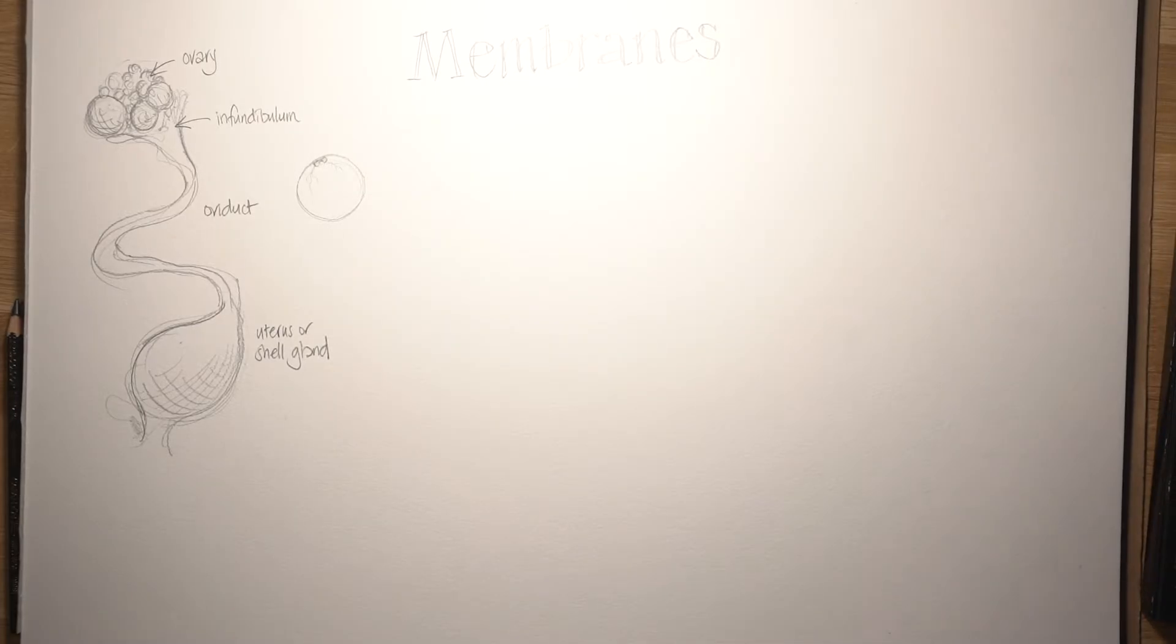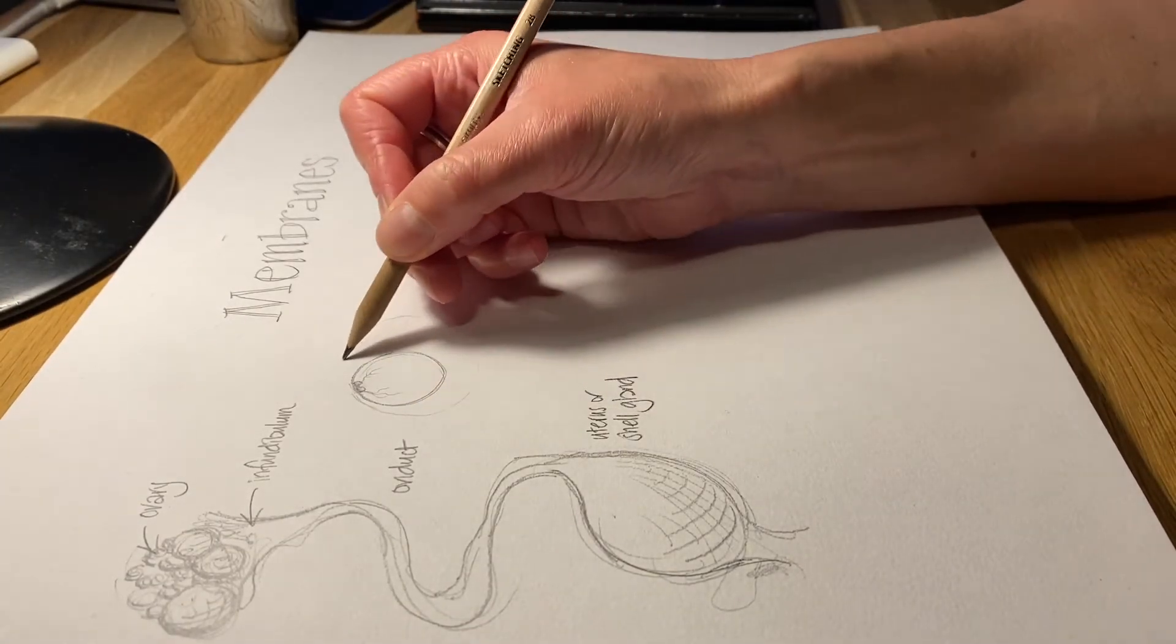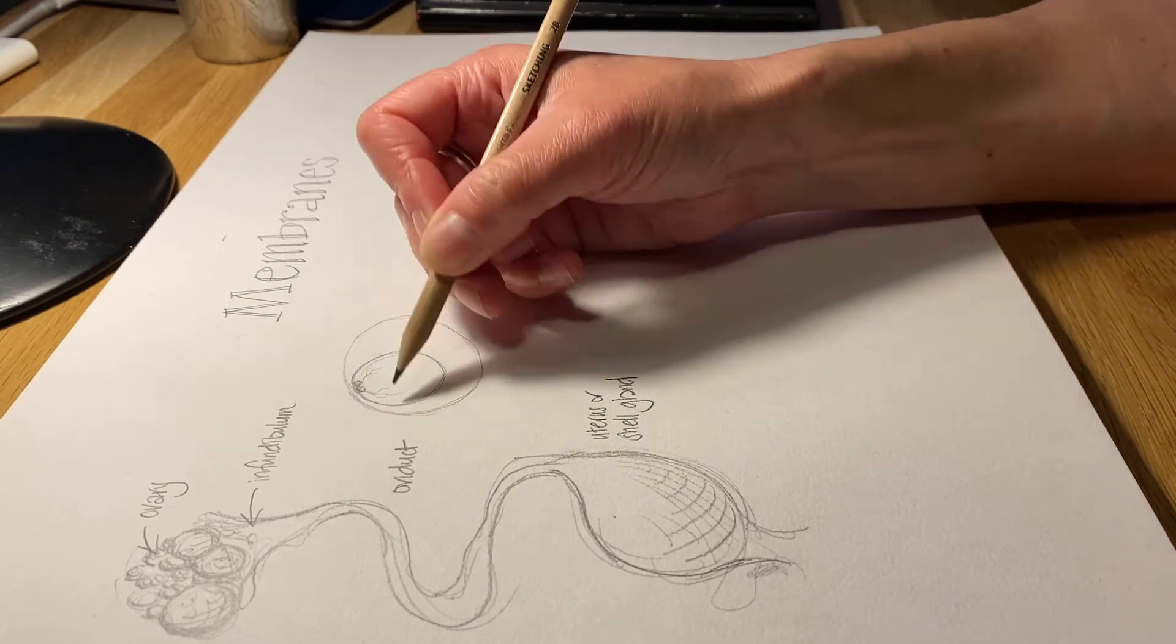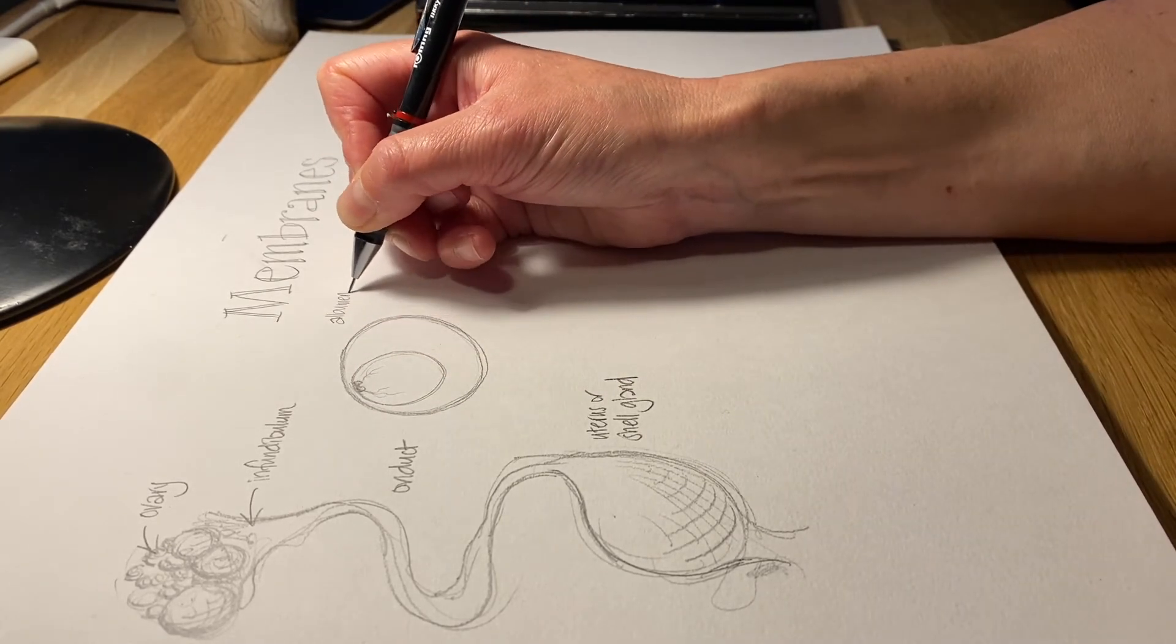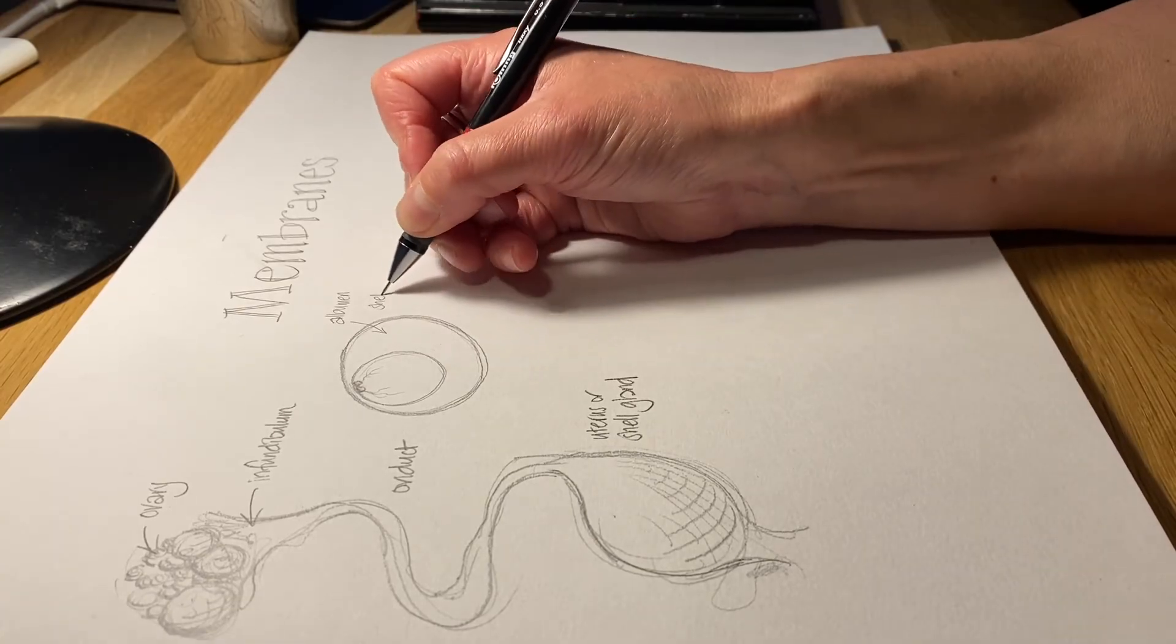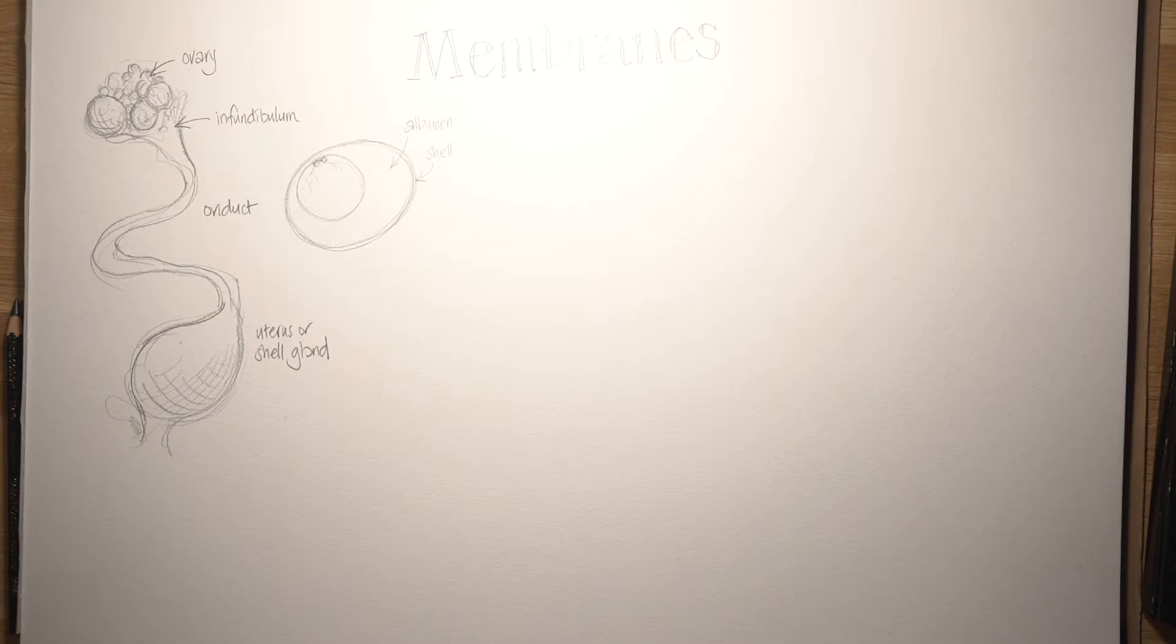You can see that blastodisc developing there, and some blood vessels starting to form as well. As that fertilized egg, which is already starting to develop, slips down the oviduct, it becomes covered in the egg white, the albumin, and then also the shell, which will protect it when it's laid.